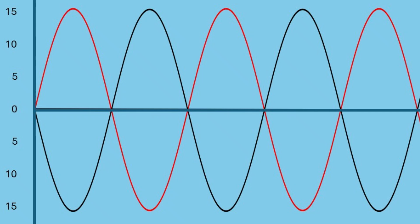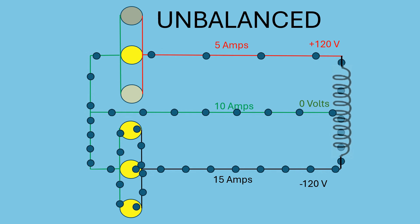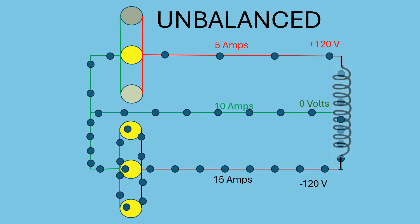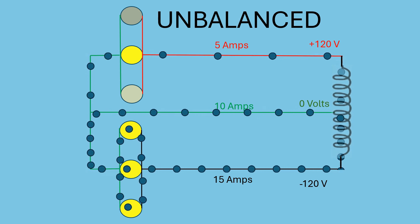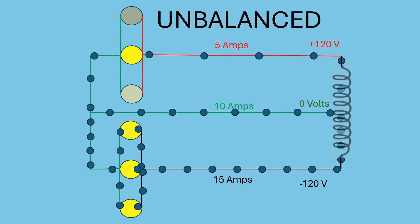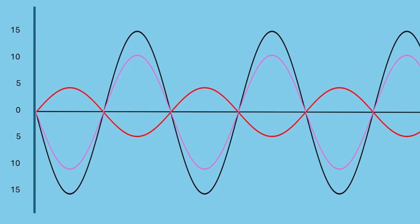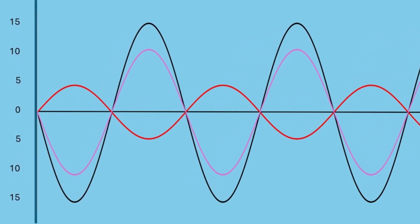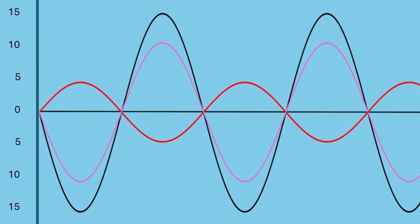And now let's look at an example of an unbalanced circuit. In this case, you've got 15 amps on one leg, and you've got 5 amps on the other leg. The difference, 10 amps, is running on the neutral wire. The neutral wire always carries the difference in the current between the two legs. And here's a graph that shows what's happening in this unbalanced scenario. You can see 15 amps on one leg and 5 amps on the other leg. And then the purple line shows the 10 amps that are flowing on the neutral wire.